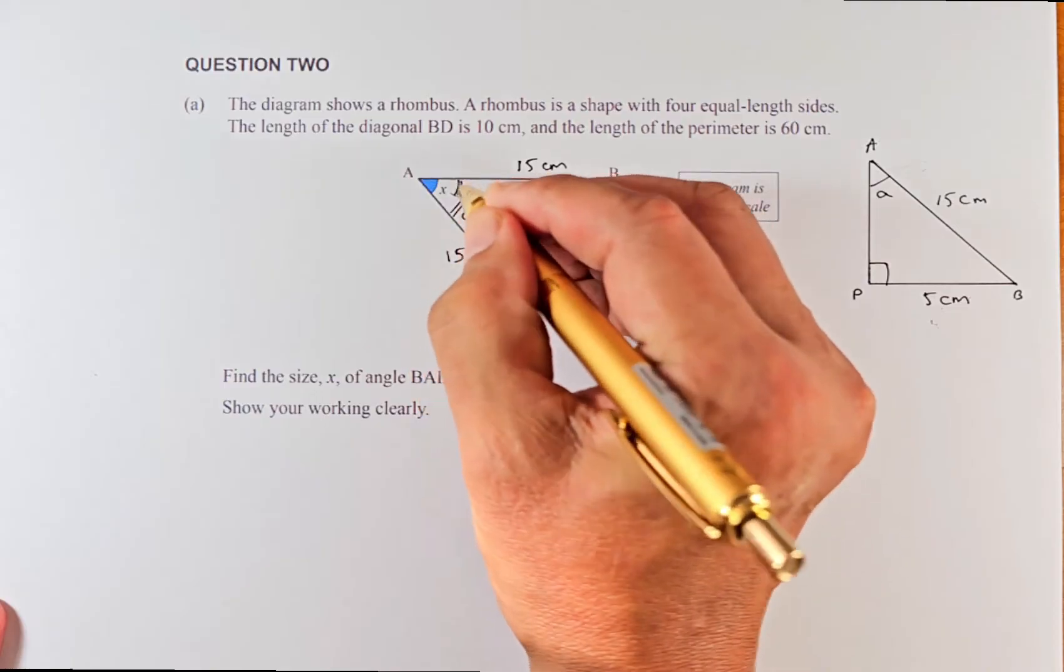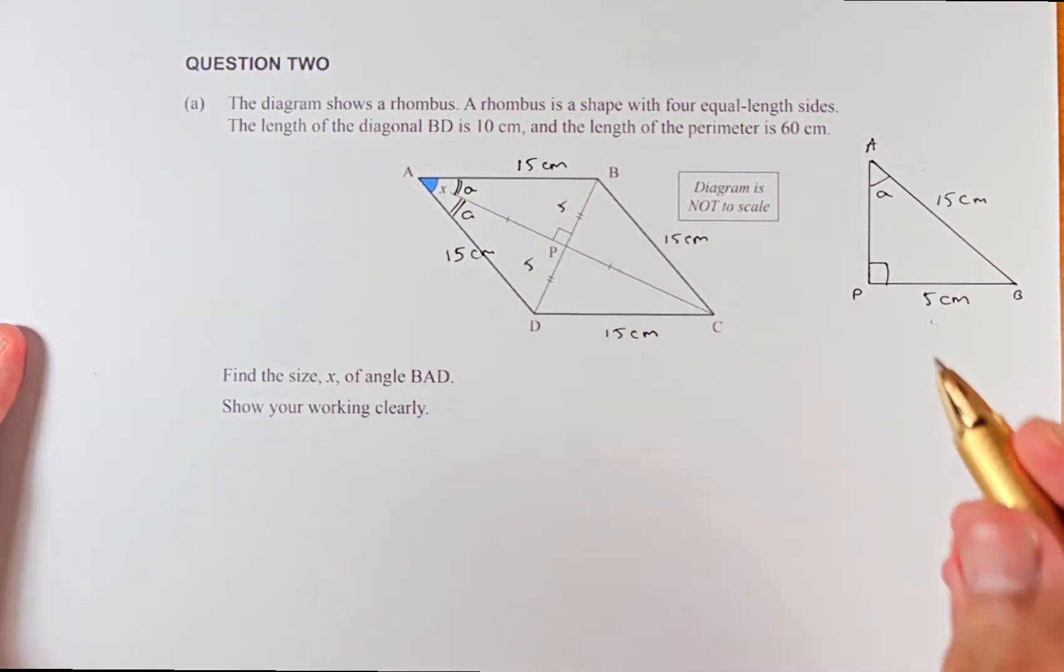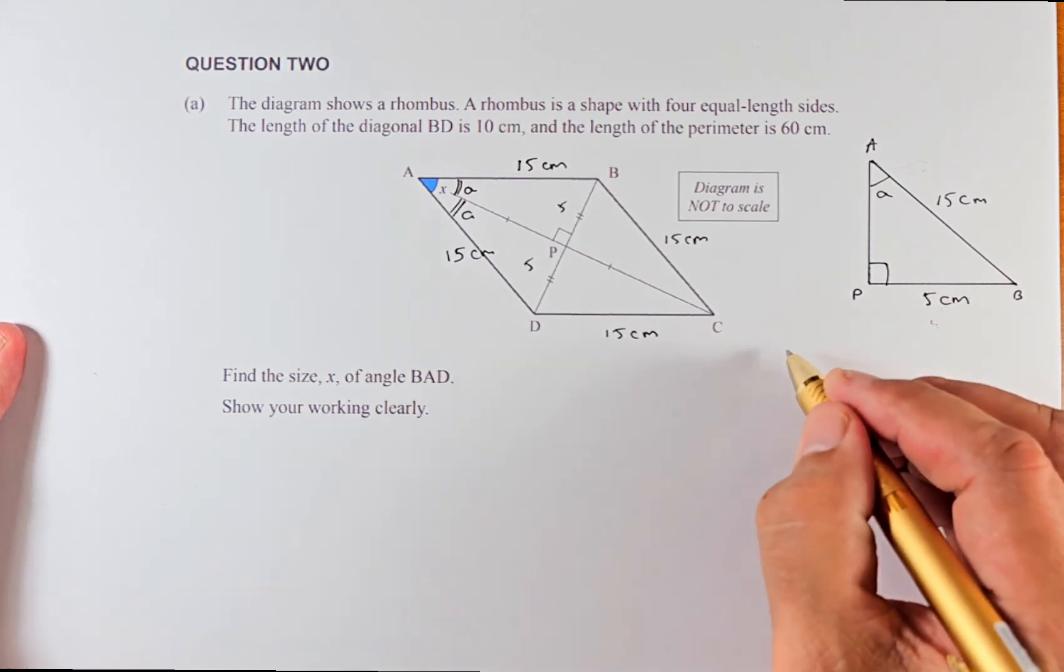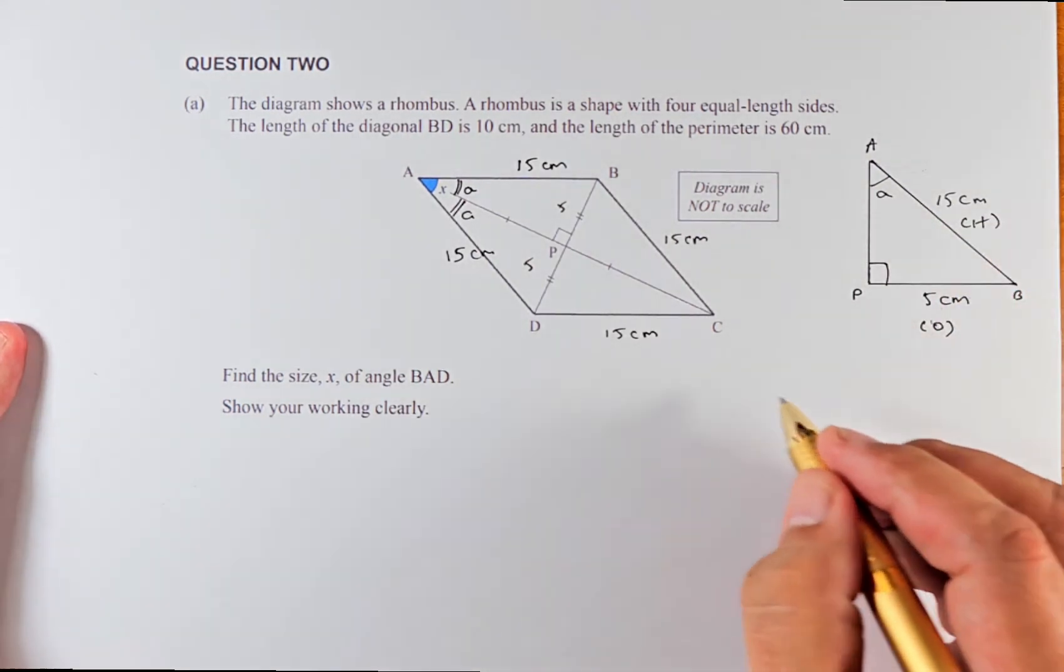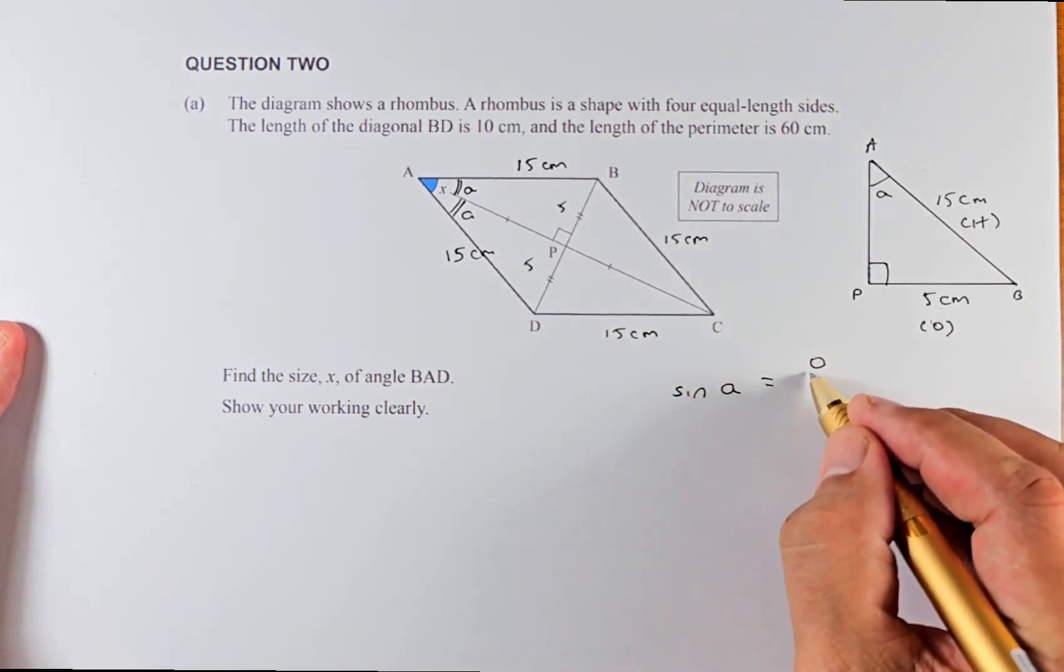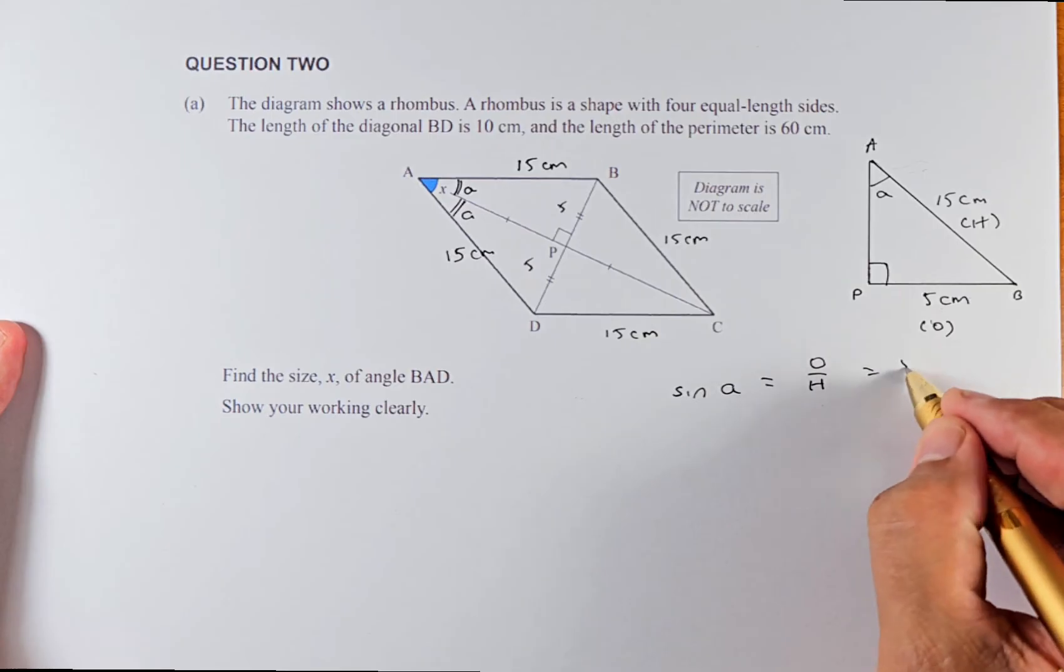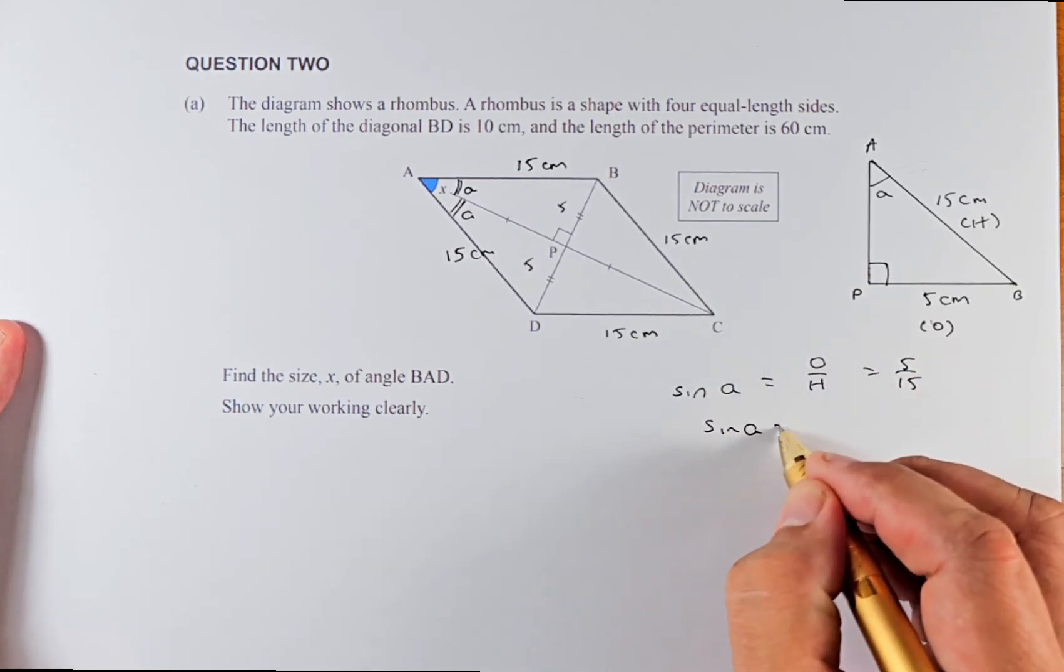We're going to solve for a first. We have to use the trig ratio. This is opposite, this is hypotenuse, so we have to use sine. So sine a is going to be opposite over hypotenuse, which is 5 over 15.